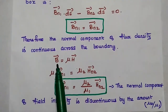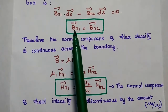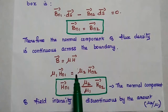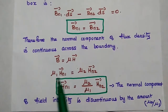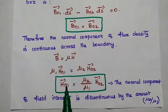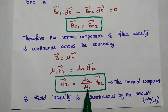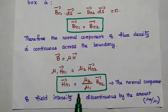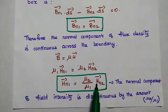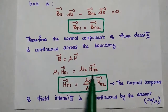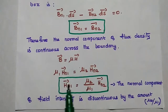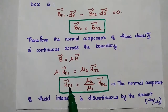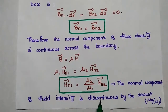As we know, B is equal to mu times H. Then BN1 and BN2 can be replaced, giving mu1 HN1 is equal to mu2 HN2. Rearranging, HN1 is equal to (mu2 / mu1) HN2. This means the normal component of magnetic field intensity is discontinuous by the factor mu2 / mu1. So the normal component of magnetic flux density is continuous, but the normal component of magnetic field intensity is discontinuous.